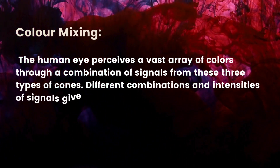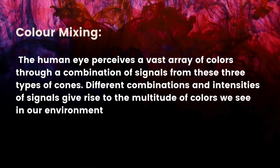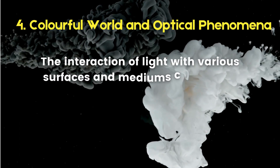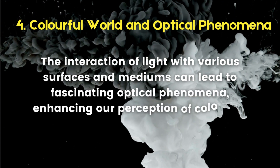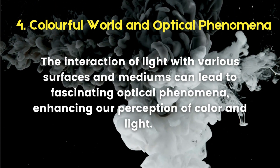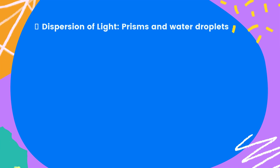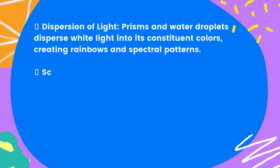Different combinations and intensities of signals give rise to the multitude of colors we see in our environment. The interaction of light with various surfaces and mediums can lead to fascinating optical phenomena, enhancing our perception of color and light. Dispersion of light: prisms and water droplets disperse white light into its constituent colors, creating rainbows and spectral patterns.